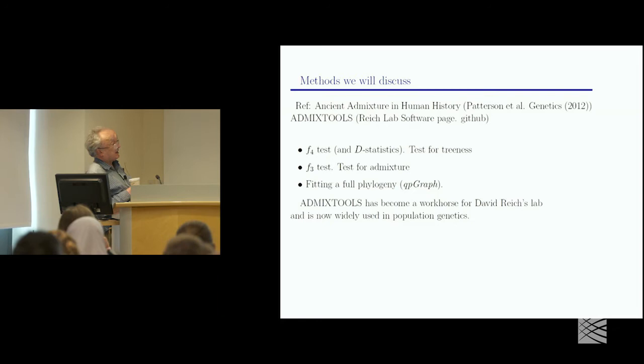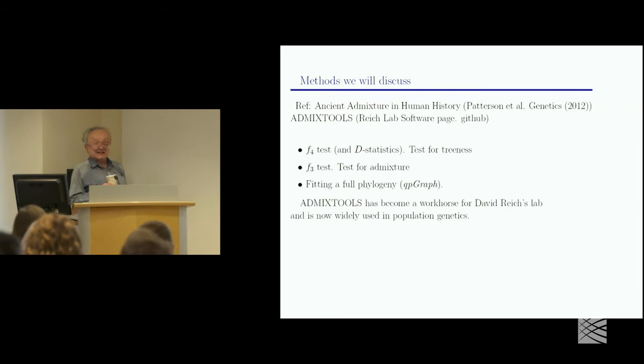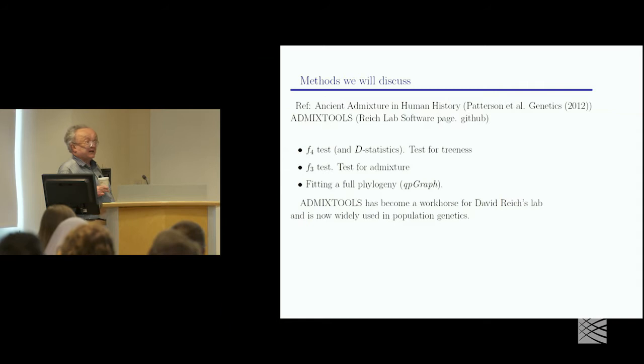All right, so I want to talk about three things this morning. I want to talk about what we call the F4 test, and a link thing, these statistics, which is a test for whether you actually have a tree phylogeny at all. I want to talk about the F3 test, which is a test for admixture. And I want to, rather briefly, although it could actually be a lecture by itself, I want to talk about fitting a full phylogeny with a program I call QPGRAF.